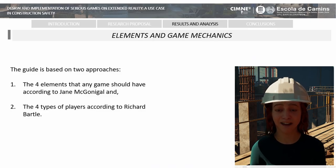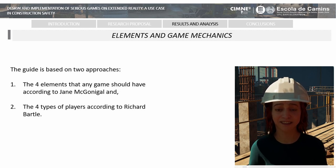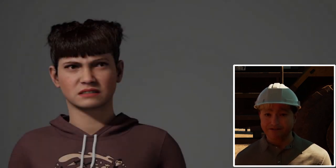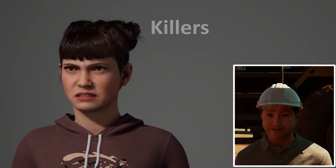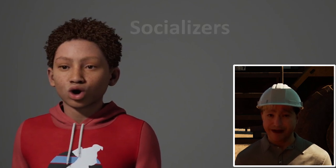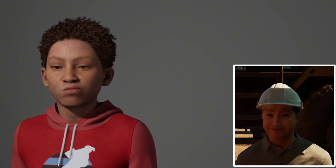Continuing with Richard Bartle's approach, we ask ourselves what this type of player would like to find in our educational experience. Achievers: a focus on attaining status and achieving pre-set goals quickly and completely. Explorers: a focus on exploring and a drive to discover the unknown. Killers: a focus on winning, rank, and direct peer-to-peer competition. Socialites: a focus on socializing and a drive to develop a network of friends and contacts.